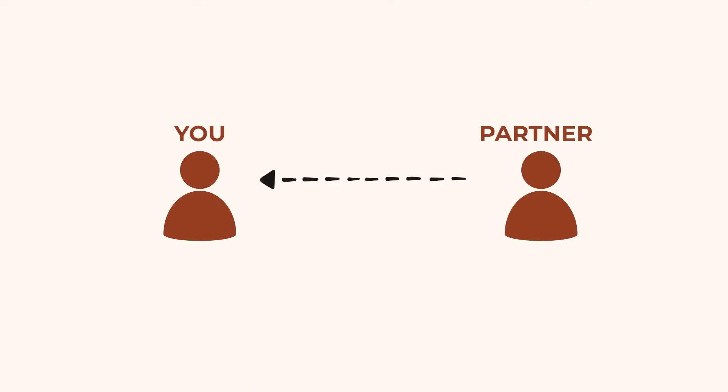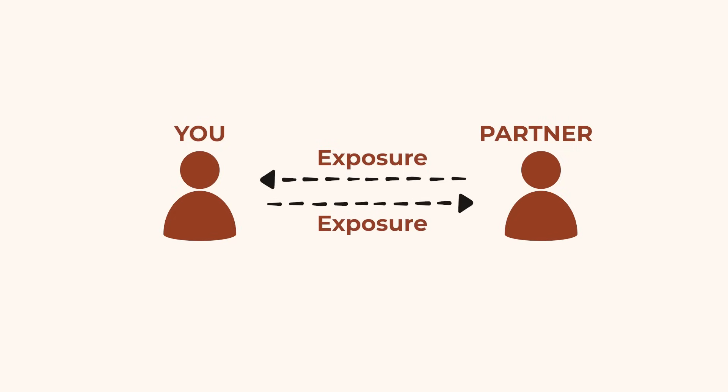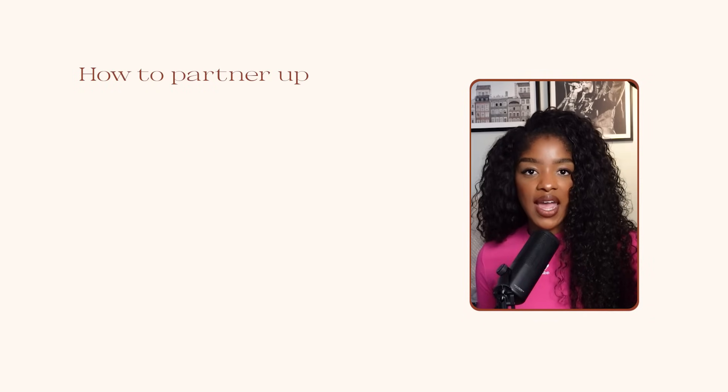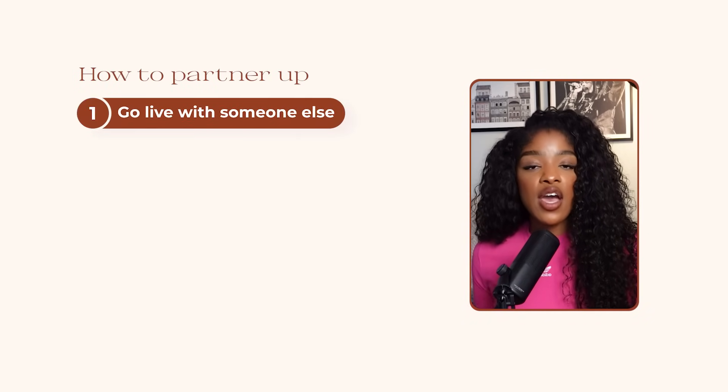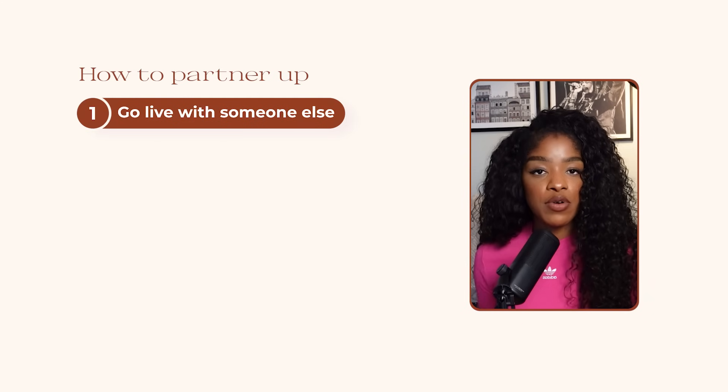What I'm referring to here is when you partner up with another creator or with a brand and you create content which is viewed by both of your audiences. By doing this you are able to get exposure to your partner's audience and your partner is able to get exposure to your audience. When you partner up with people who have similar audiences to you this could unlock some serious growth. The first and most common and easiest way is to go live with someone else or multiple people — you can go live with up to three other people. When you do that their audiences will join the live and it gives you an opportunity to speak to that audience and for that audience to fall in love with you.